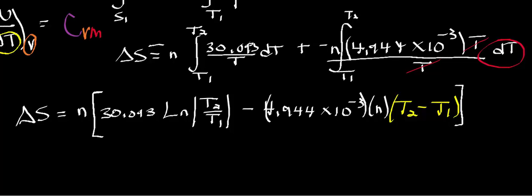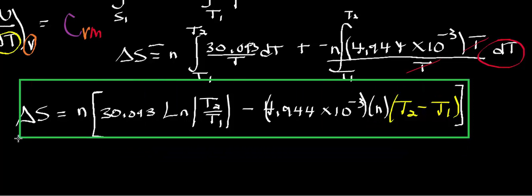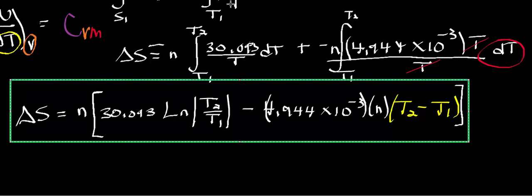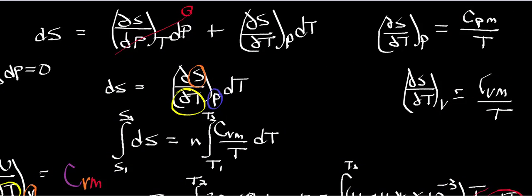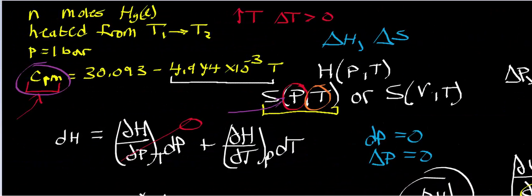And that is your expression for the entropy of the heating of the liquid mercury. Remember, you shouldn't memorize a bunch of formulas — you should recognize some identities and derive these formulas on the spot. Hopefully that made sense. See you in the next video, where we'll do some more problems.